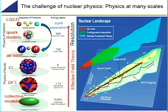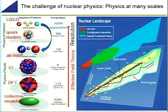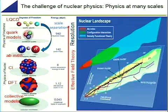I indicate here with red lines the magic nuclei, which are points where either protons or neutrons are occupying a full shell closure, with a large gap before the next single particle levels.